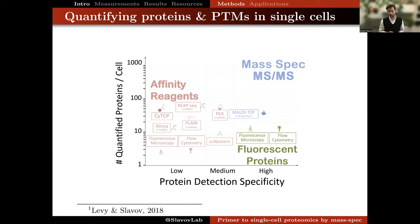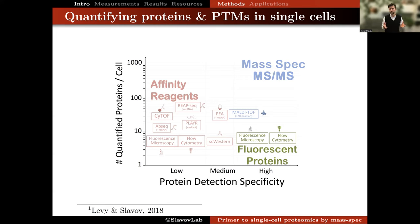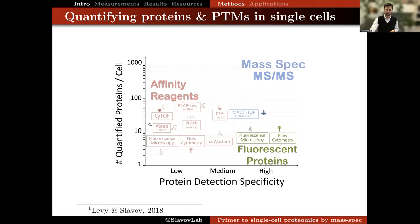We can see the answer to this question in a graph we published a few years ago. Affinity reagents generally struggle with detection specificity. High-quality affinity reagents exist, but that is not the norm, and the number of epitopes we can analyze per sample is generally very limited—from a single epitope to maybe a few dozens, maybe a hundred, but certainly not many thousands. We were very interested in using tandem mass spectrometry to increase both the specificity and the number of reliably quantified proteins and potentially proteoforms in single cells.